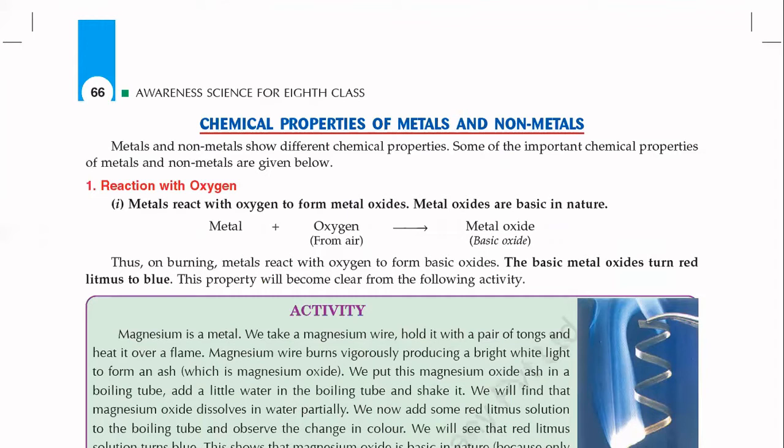Before that, I would like to tell you a little bit about litmus paper. If you have already studied it, good; if you don't know, there is no tension. Litmus paper comes in two colors: red litmus paper and blue litmus paper. These two are used to check whether a chemical solution we have is acidic or basic.